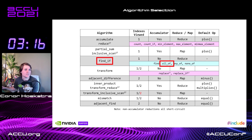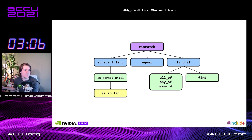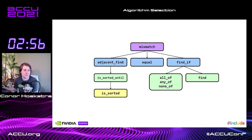The main part of the blog I want to highlight is the following. All of these are basically what I call mismatch algorithms: adjacent_find, is_sorted_until, is_sorted, equal, find_if, all_of, any_of, none_of, and find. The assertion I'm making is that whenever you can choose the most specialized version — the algorithm furthest from the root, mismatch — that works for your problem.